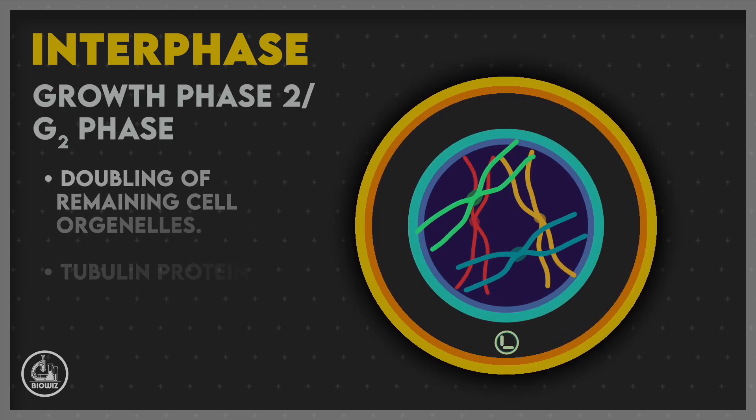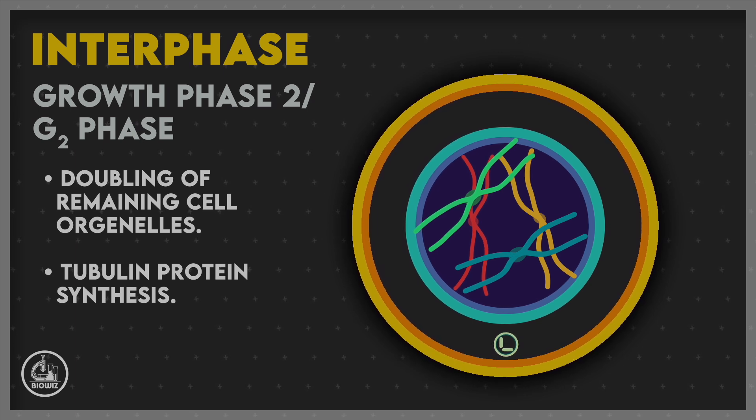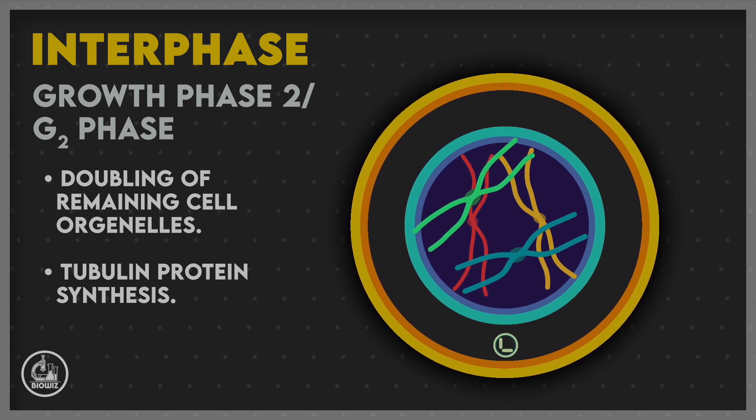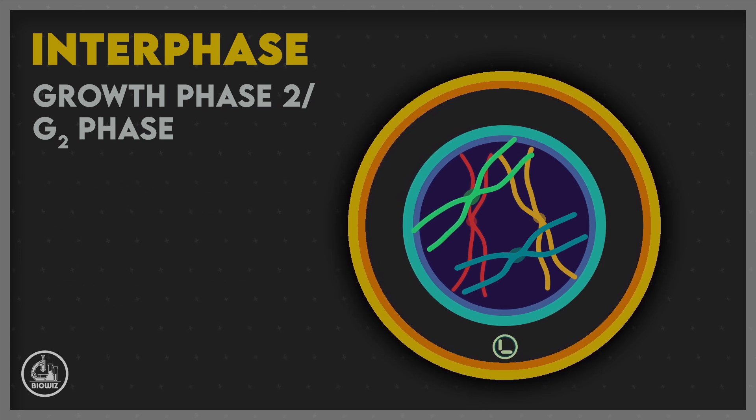The main events of G2 phase are doubling of remaining cell organelles, synthesis of tubulin proteins to form spindle fibers during meiosis, and increase in size of the cell. After completion of interphase, the cell enters meiosis I.